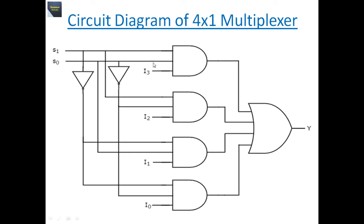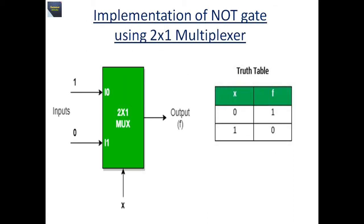This is the circuit diagram of the 4x1 multiplexer. This circuit is implemented using two NOT gates, four AND gates, and one OR gate. The inputs are i3, i2, i1, i0, the selection lines are s1 and s0, and the output is y. We can similarly implement an 8x1 multiplexer and a 16x1 multiplexer.